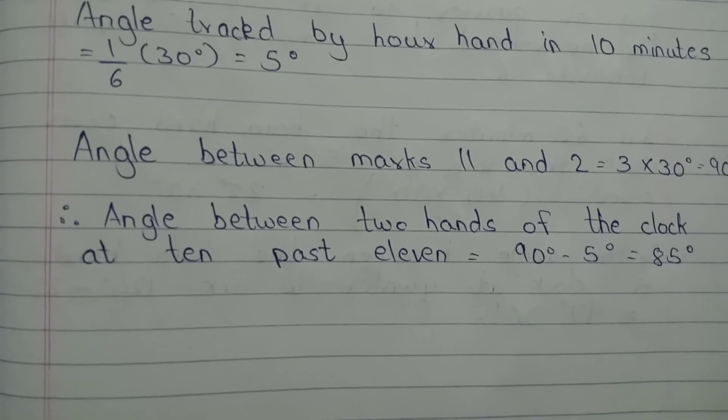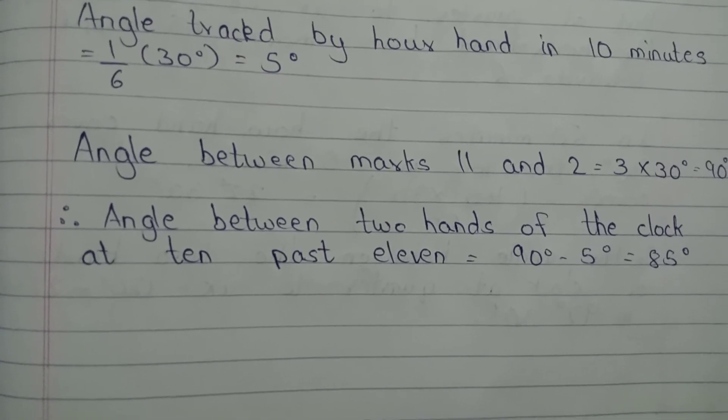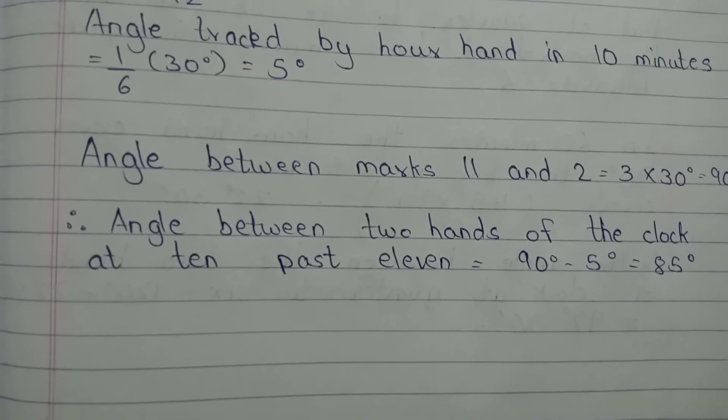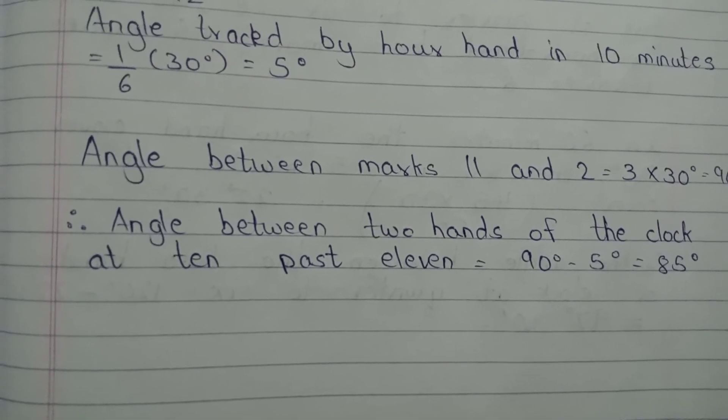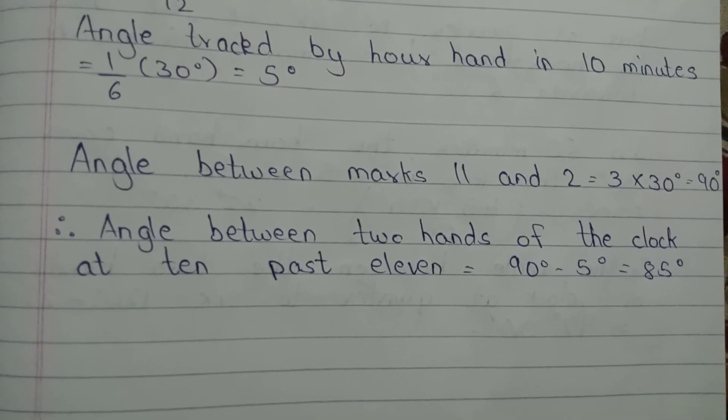So the answer will be: angle between two hands of the clock at 10 past 11 is equal to 90 degrees minus 5 degrees, and the answer is 85 degrees.